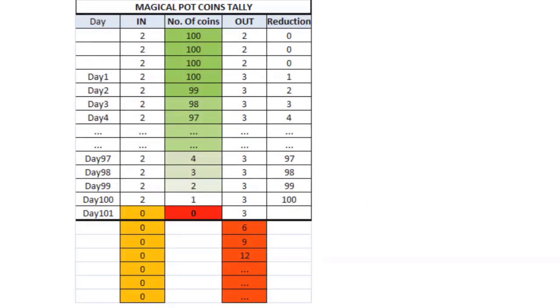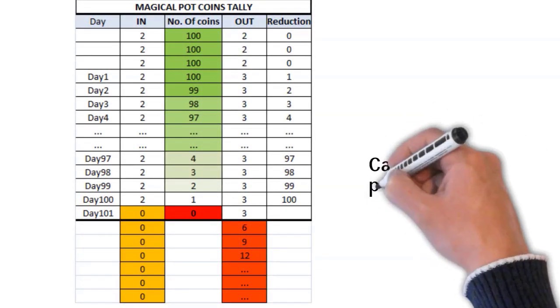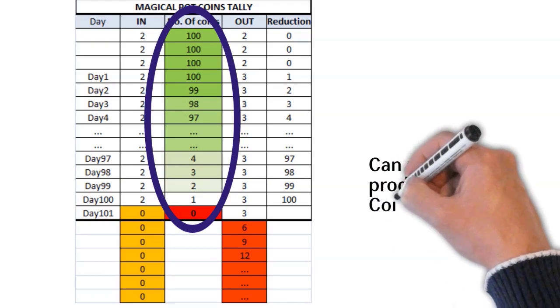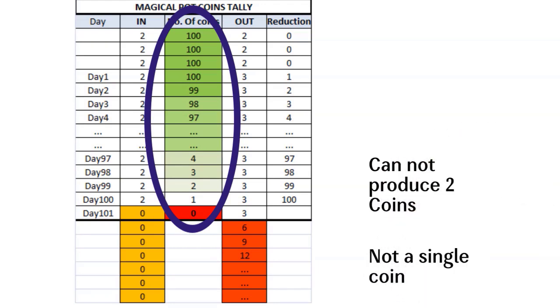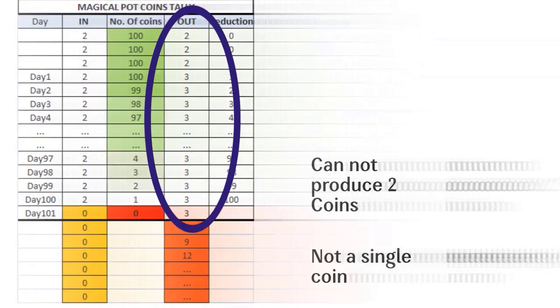During this process, slowly the stock of coins in the magical pot decreases day by day. And once the pot becomes empty, it cannot add even its two coins also, and this diminishes the magical ability of that pot to deliver even a single coin.